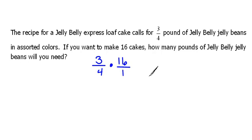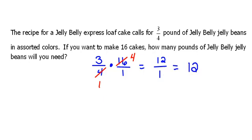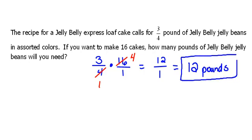I'm going to write 16 over one, and now we can do our simplification. Four goes into four one time, and four goes into 16 four times. So three times four would be 12, and one times one would be one. And 12 divided by one would be 12. This tells us that we're going to need 12 pounds of Jelly Belly's in order to make those 16 cakes. We'll see you next time.